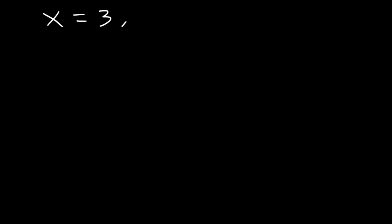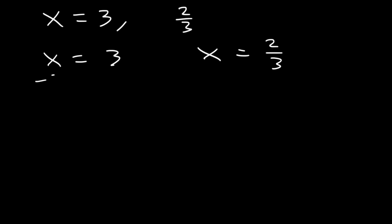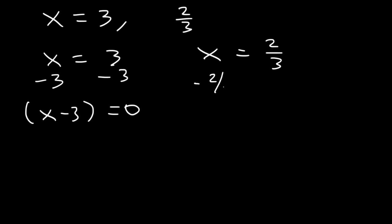Let's say x equals 3 and x equals 2/3. Write both equations. For the first one, subtract both sides by 3: x minus 3 equals 0. For the other one, subtract both sides by 2/3: x minus 2/3 equals 0.